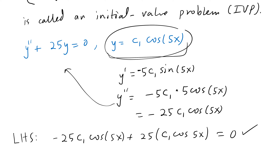For every value of c₁ you get a solution. If c₁ = 5, then 5cos(5x) is a solution. If c₁ = 11, then 11cos(5x) is a solution. c₁ = 2/3 gives (2/3)cos(5x), and c₁ = -√2 gives -√2·cos(5x) as solutions. But how many of those solutions pass through a specific initial condition?